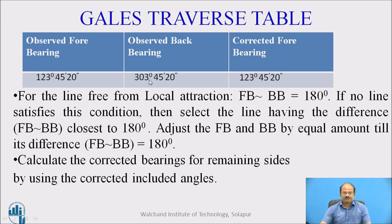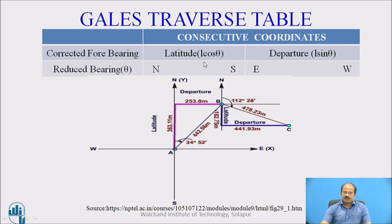If we do not get data where the difference is exactly 180 degrees, we can manipulate the forebearing and back bearing such that each is adjusted by an equal amount, and finally the difference between the two must be exactly 180 degrees. We will then calculate the corrected bearings for remaining sides using the corrected included angle and the data of one line whose difference is exactly 180 degrees. Further, we convert the corrected forebearings into reduced bearings, since the theodolite measures bearings in the whole circle bearing system, but calculation of consecutive coordinates requires the reduced bearing system.